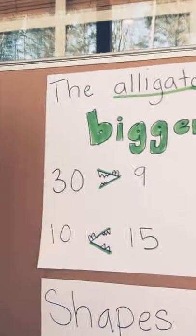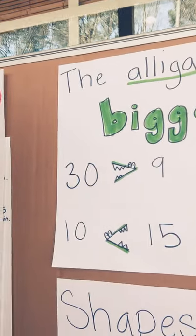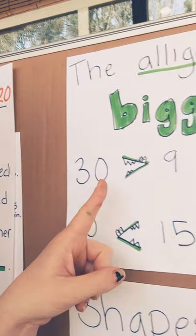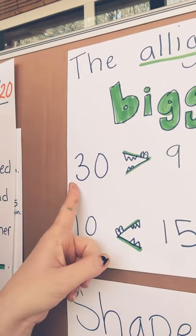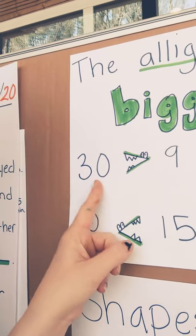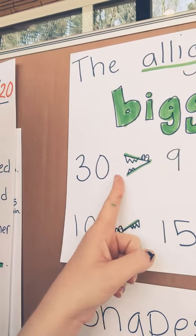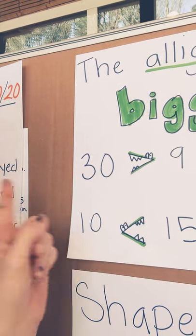So if you look right over here, you see there are two numbers, 30 and the number 9. Which number is bigger? 30! So which one does the alligator want to eat? 30! That's right.